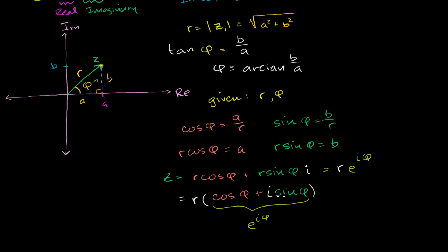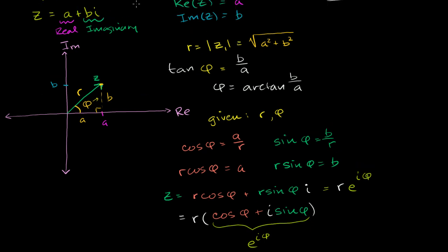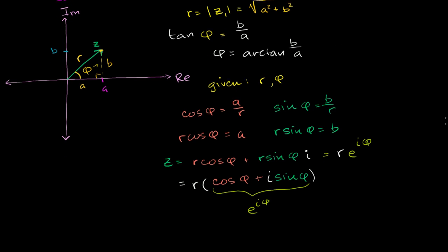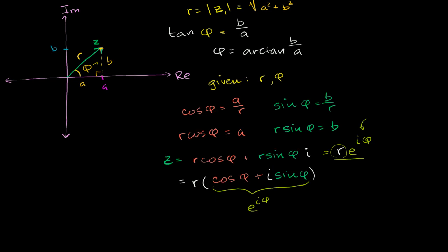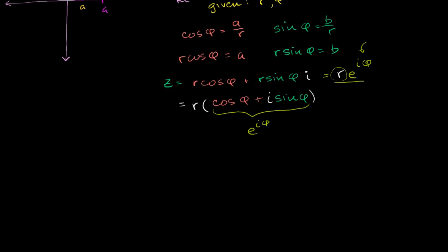So there are two ways to write a complex number: you could write it in rectangular form with the real and imaginary parts, or in exponential form where you have the modulus multiplied by a complex exponential. We're going to see that this exponential form can be super useful, especially when we're trying to find roots.